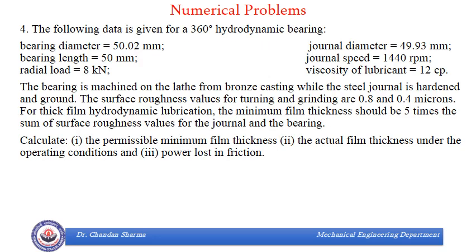This is one more variant of problems. Here we are given bearing diameter, journal diameter, bearing length, journal speed, radial load and viscosity of lubricant. Now it has been mentioned that the bearing is machined on lathe from bronze casting, while steel journal is hardened and ground. The surface roughness values for turning, grinding are 0.8 and 0.4 microns. For thick film lubrication, minimum film thickness should be five times the sum of surface roughness values for the journal and the bearing. We need to find permissible minimum film thickness, actual film thickness under the operating conditions and power loss in friction.